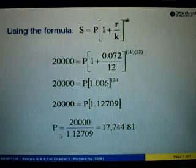From here, we can find P. So shift this 1.12709 to the left, we will get 20,000 divided by 1.12709. So using your calculator, we will get P equals to 17,744.